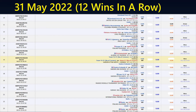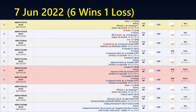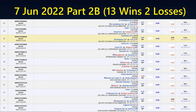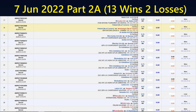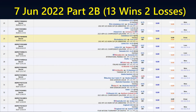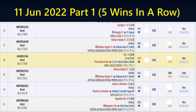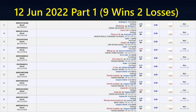31st May: 12 wins in a row. 7th June: 6 wins, 1 loss. Part 2A — because there are two screens — 13 wins, 2 losses. 2B: 13 wins, 2 losses. Just need to see the serial number and follow accordingly. 10th June: 6 wins, 1 loss. 11th June Part 1: 5 wins in a row. Part 2: 6 wins, 1 loss.